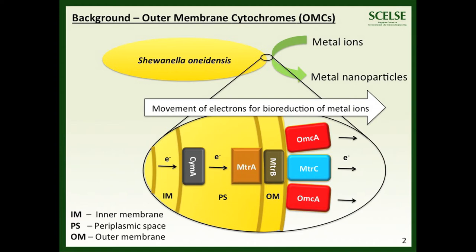This approach has become an attractive focus in current green nanotechnology research towards sustainable development. Many organisms can be used to synthesise metal nanomaterials. Among them, the bacterium Shewanella oneidensis is able to reduce a diverse range of metal ions extracellularly, and these extracellular productions greatly facilitate the extraction of nanomaterials.